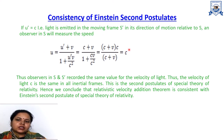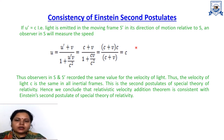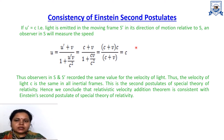Now, what is the significance of the addition of velocity theorem? The two most important consequences are: first, consistency with Einstein's second postulate, and second, the maximum velocity of light. Let us discuss the first application — consistency with Einstein's second postulate. If you recall, according to Einstein's second postulate, the speed of light is constant in all inertial frames of reference in vacuum. With the addition of velocity theorem, we will prove this postulate.